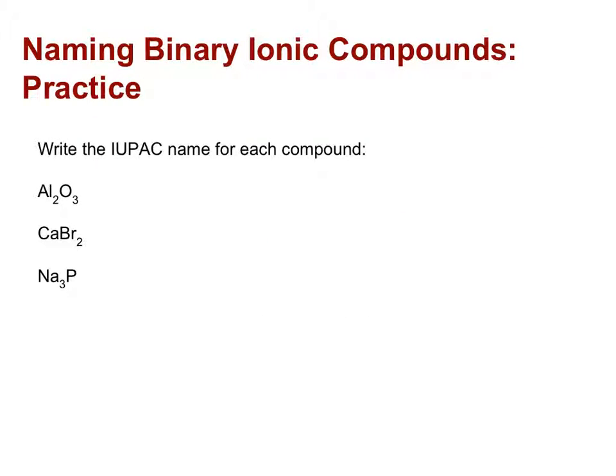Let's look at three more examples. The first one, Al2O3. Al is aluminum, it's our metal, we're going to name it first, followed by our non-metal, changing the ending to -ide becomes oxide. So aluminum oxide.